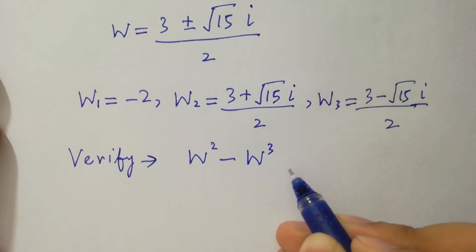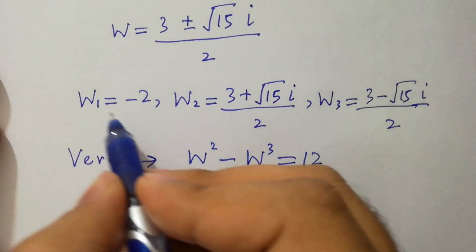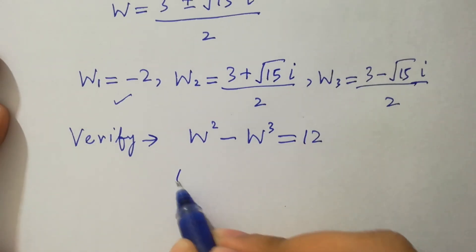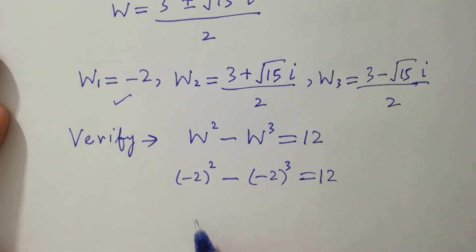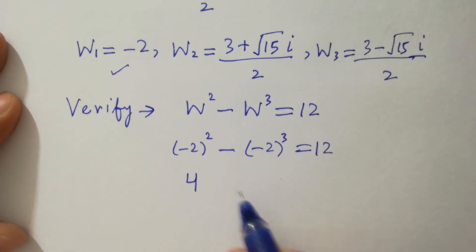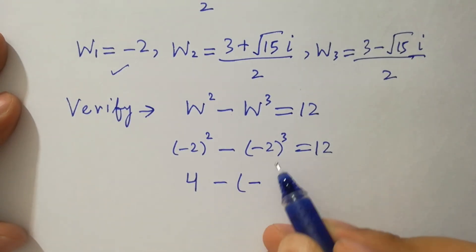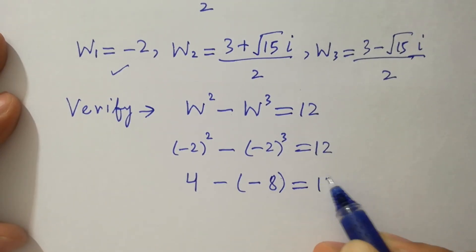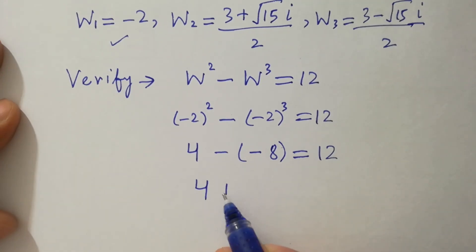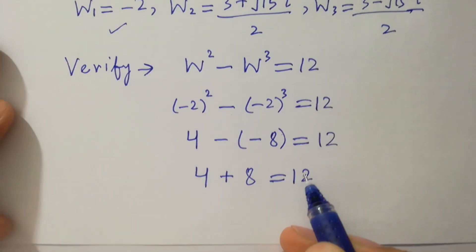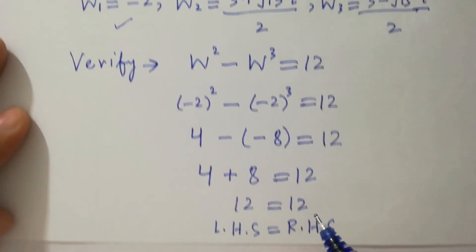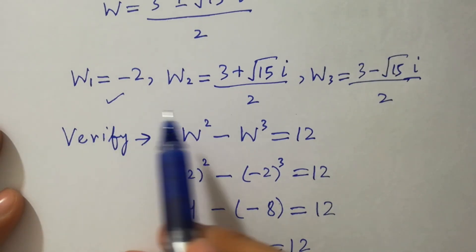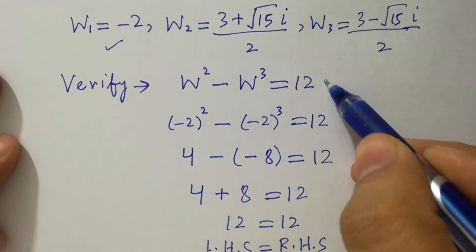Let's verify: w squared minus w cubed equals 12. Put w equals minus 2: we have minus 2 squared minus minus 2 cubed equals 12. That gives plus 4 minus minus 8, since 3 is odd the negative stays, so 4 plus 8 equals 12. Left hand side equals right hand side, which confirms that w equals minus 2 is correct. Similarly, w₂ and w₃ also satisfy the equation.